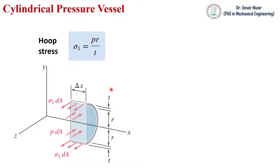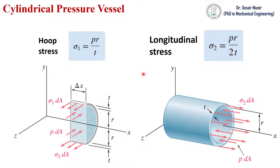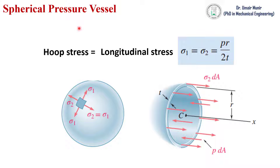The stresses produced in a cylindrical pressure vessel are called hoop stress, given by the equation. It is also called circumferential stress because it acts along the circumference. The second stress acting on a cylindrical pressure vessel is the longitudinal stress, also called axial stress because it acts along the axis of the pressure vessel. In spherical pressure vessels, the hoop and longitudinal stresses are equal and there is uniform stress distribution.